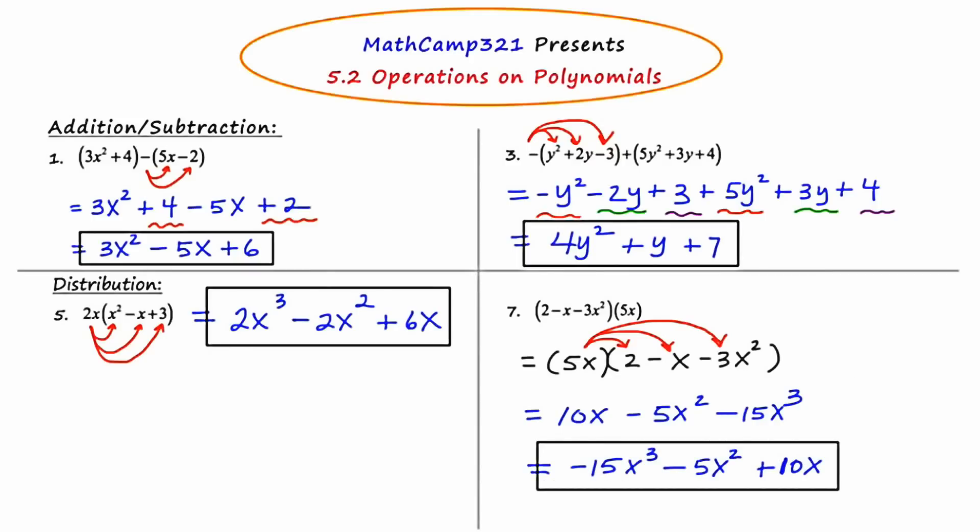So here are four examples — two dealt with addition and subtraction, and two dealt with the distributive property. Some things to remember: collect like terms, and use descending exponential order, which is the ideal way of expressing your answer if you're able to do it. Let's go on to slide number two.